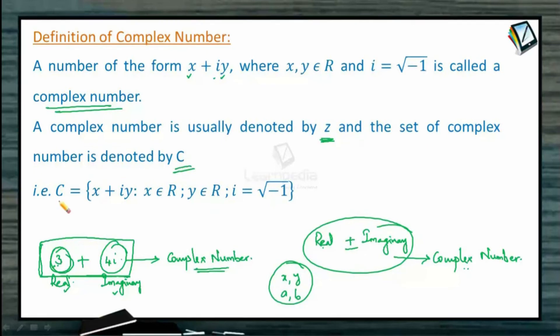So how will be the elements of capital C? That will be in the form a real part plus an imaginary number, that is x plus iy, where x is a real number and y is a real number. And what is the meaning of i? i would be square root of minus 1.